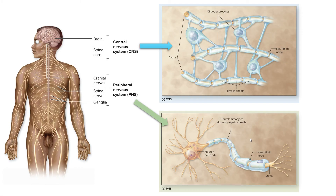So how does myelination occur in the first place? Neurons in the central nervous system are myelinated by oligodendrocytes, and a single oligodendrocyte can actually myelinate multiple axons, as shown in this illustration. The neurolemocytes in the peripheral nervous system, on the other hand, will only myelinate a single axon, and you will find multiple neurolemocytes along a single axon.